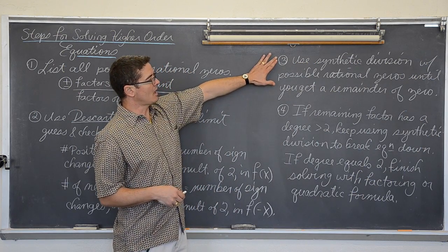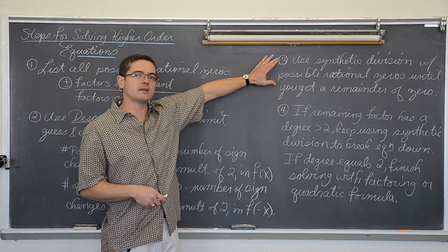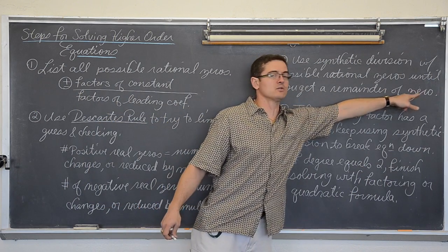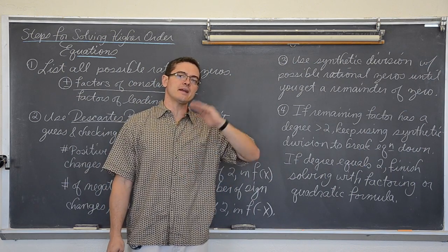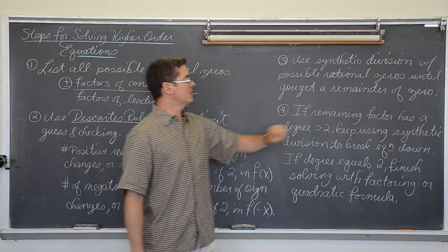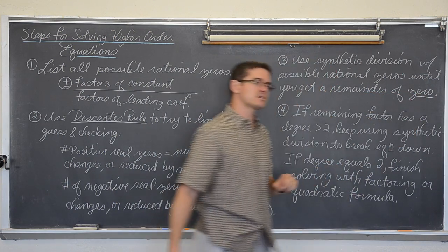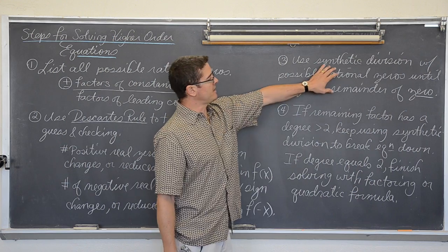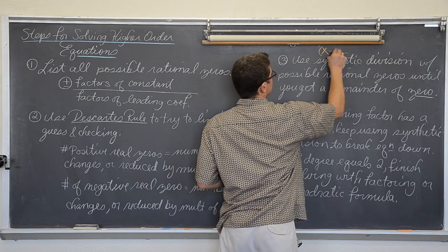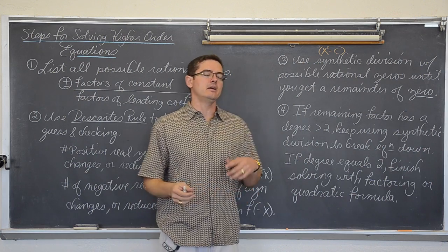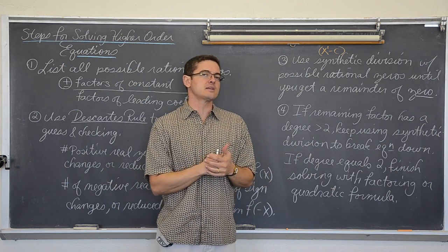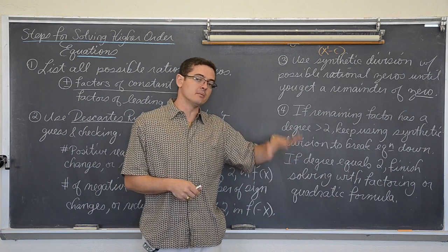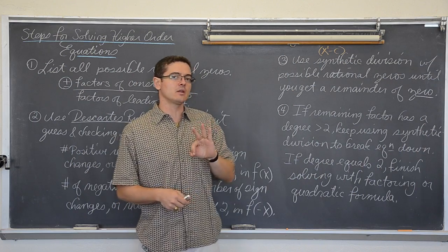Hopefully Descartes' rule will limit the number of guessing and checking you have to do. You start doing synthetic division over and over again until you find a remainder of zero. If you do synthetic division with, say, 3 and get a remainder of zero, then that graph is crossing the x-axis at 3 — or whatever number you used. Remember, with synthetic division you are dividing by the form x minus c, a binomial with a degree of 1. So if your original equation has a degree of 3 and you find a zero remainder, what is left will be a second degree polynomial.